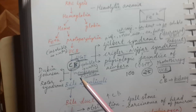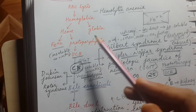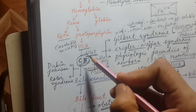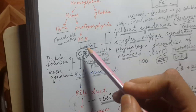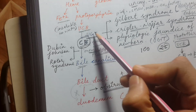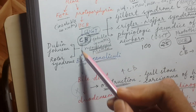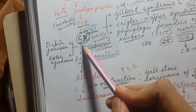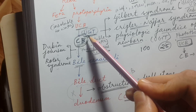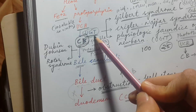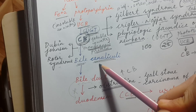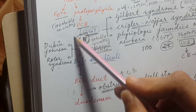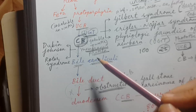One important cause not yet mentioned is hepatitis. In hepatitis there will be a problem with conjugation of bilirubin and transport of bilirubin — in short, there will be damage to hepatocytes as well as bile canaliculi, and this will also cause jaundice.